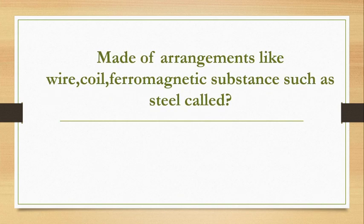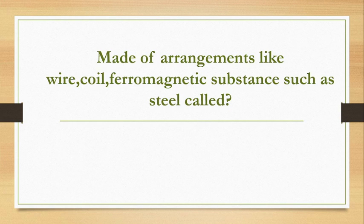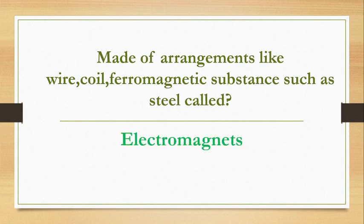Made up of arrangements like a wire coil and ferromagnetic substance such as steel. Ferromagnets are metals like iron, nickel, cobalt that have magnetic properties. A wire coil with a ferromagnetic substance such as steel is called an electromagnet.